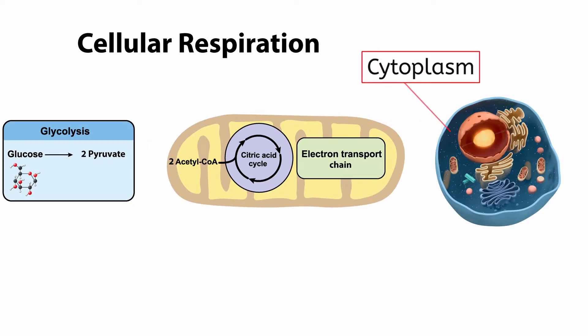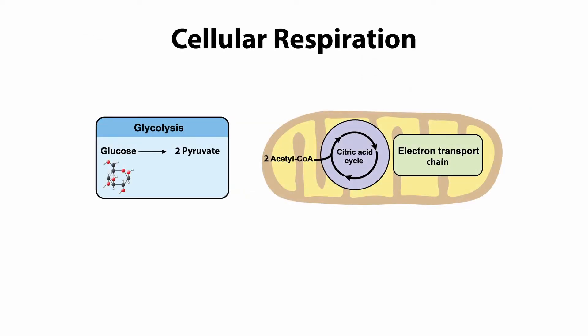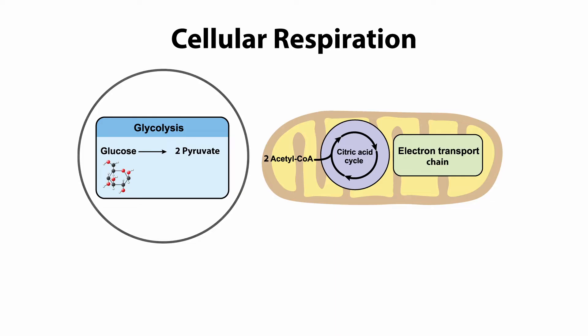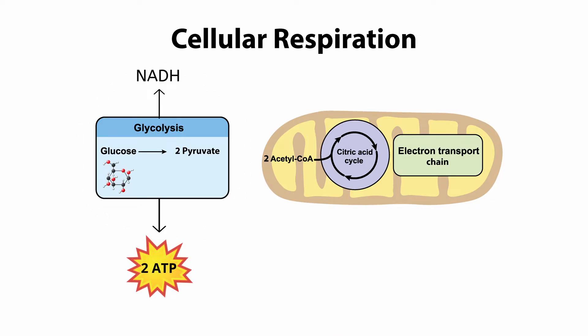Glycolysis takes place in the cytoplasm, the jelly-like substance that fills the inside of cells. The suffix 'lysis' means to break, so glycolysis means to break down glucose. Glycolysis takes place over multiple steps, but it results in a glucose molecule being split into two smaller molecules called pyruvate. Some energy from ATP is needed to power glycolysis, but it produces an overall gain of two ATP and some NADH. Like NADPH from photosynthesis, NADH is a molecule which can donate electrons when needed. We've split glucose into two pyruvate and gained two ATP.